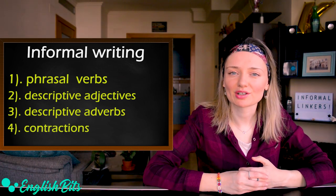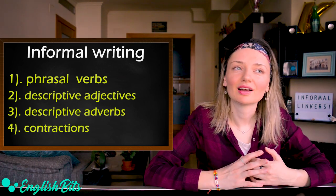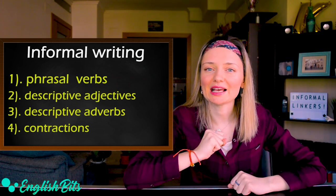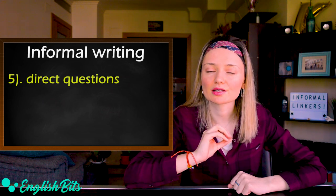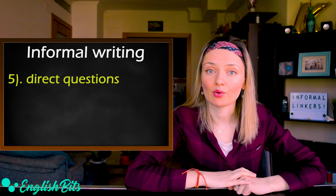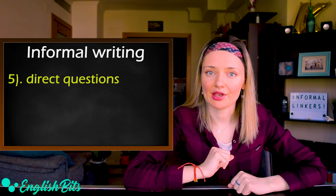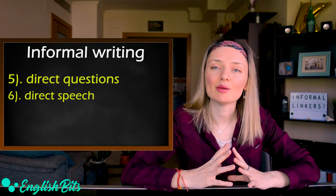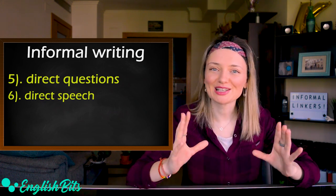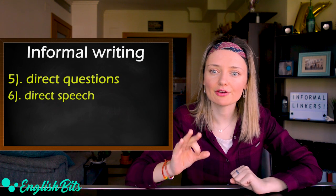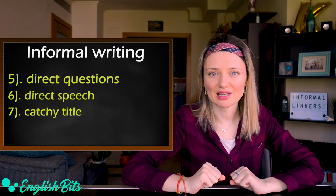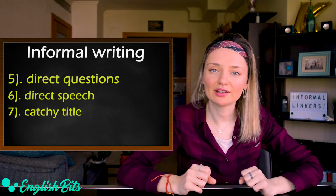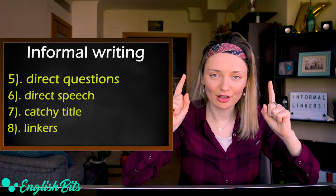Also, remember to use contractions like I'll, she isn't, or he doesn't. It's also a good idea to use direct questions addressed to the reader — for example: what would you do if you could take a gap year? On top of that, you could use direct speech, for example: 'impossible is nothing,' she said. It's also important to give your writing a catchy title — for example: 'it's never too late.' And last but not least, you should definitely use informal linkers.